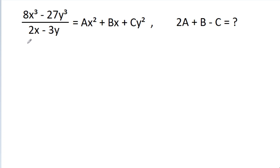In this video, we have given that (8x³ - 27y³) divided by (2x - 3y) is equal to ax² + bxy + cy². Then we have to find the value of 2a + b - c.